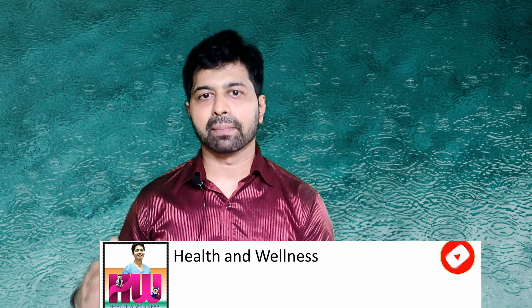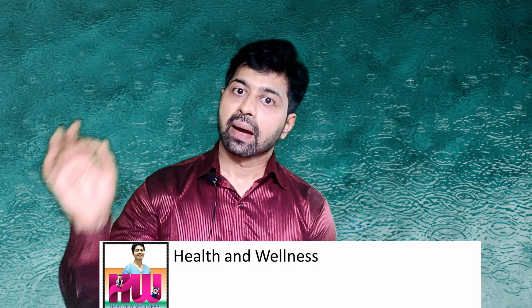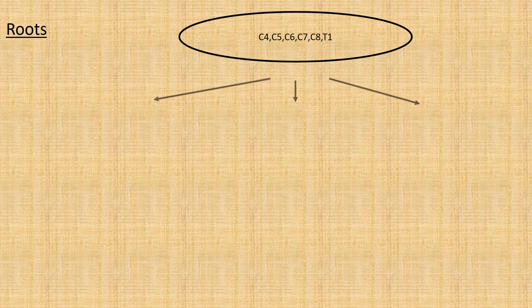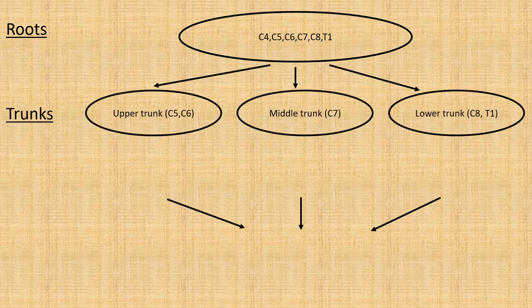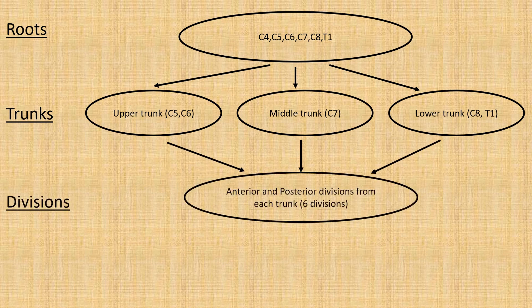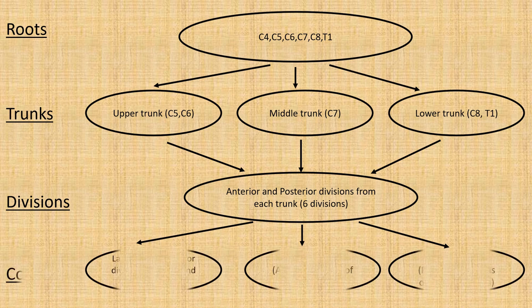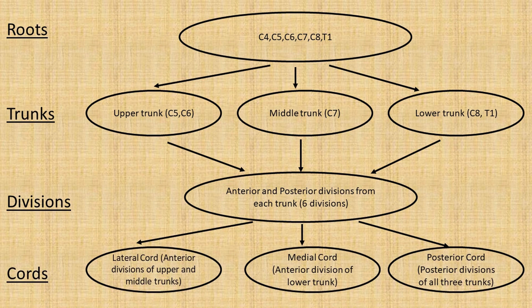Similarly, it continues in the thoracic, lumbar and sacral region. In the cervical region and upper thoracic, once these nerve roots come out of the spinal cord, they form multiple connections with the adjacent nerve roots and form what is called as brachial plexus — the trunks. These roots connect together and form the trunks, while these trunks divide and give rise to divisions, and multiple divisions combine with one another to form what is called as cords.